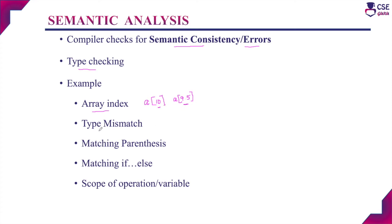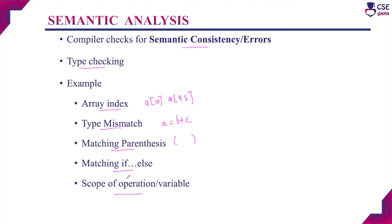The semantic analyzer also checks for type mismatches in arithmetic operations — for example, in A = B + C, both operands B and C should have the same data type; if not, an appropriate conversion must be made. It also checks for matching parentheses: the number of open parentheses must equal the number of closed parentheses, and any missing parenthesis is reported. The semantic analyzer checks if-else consistency — each else must be matched with the appropriate if statement. It also checks the scope of variables and operations.